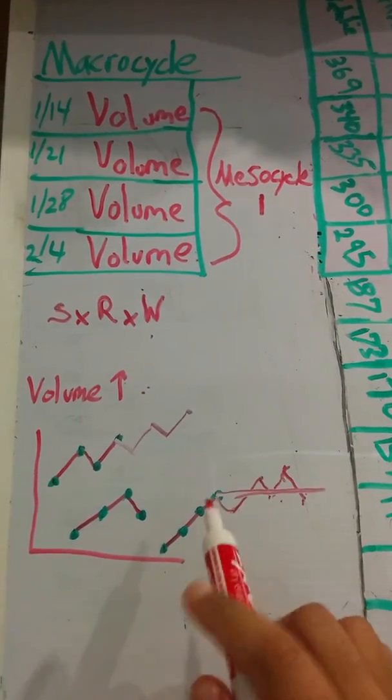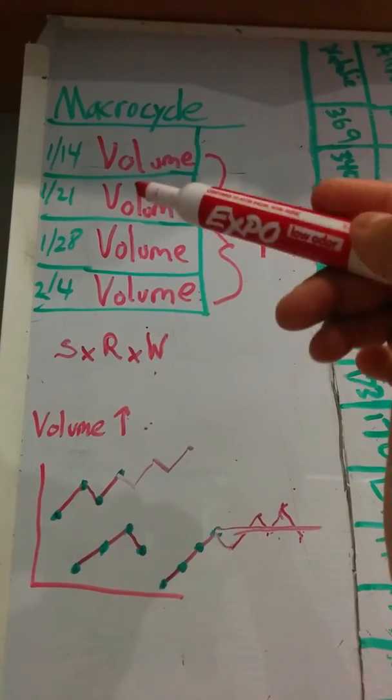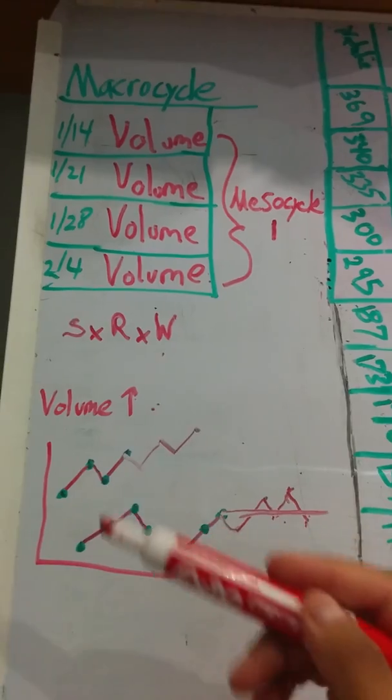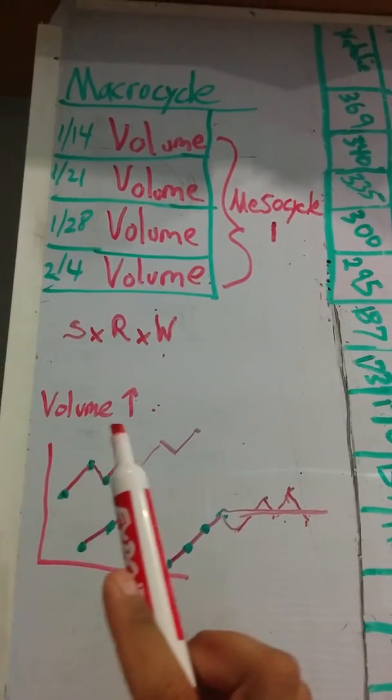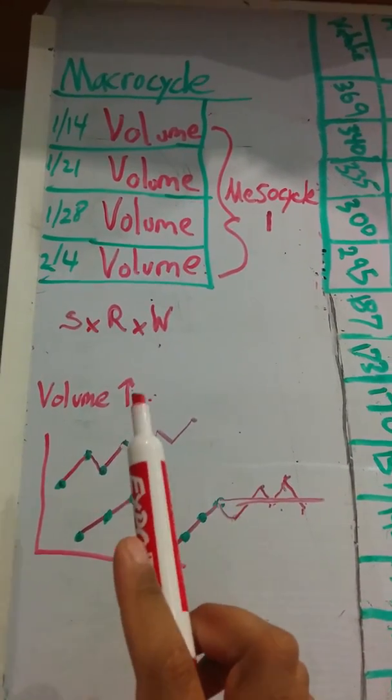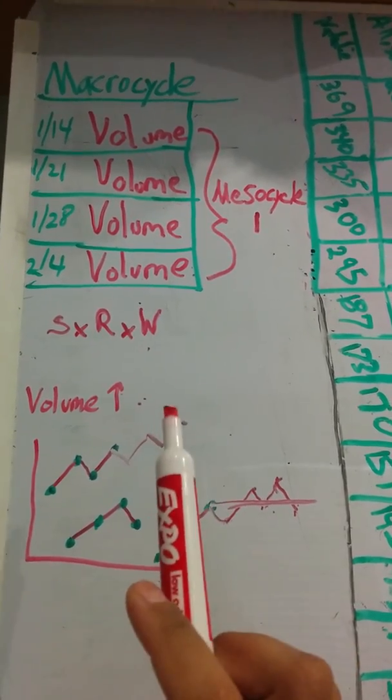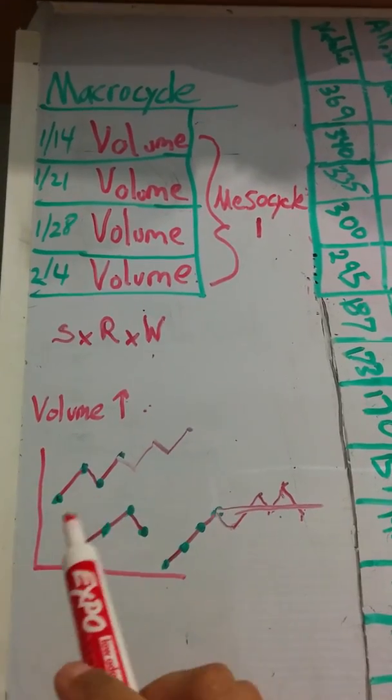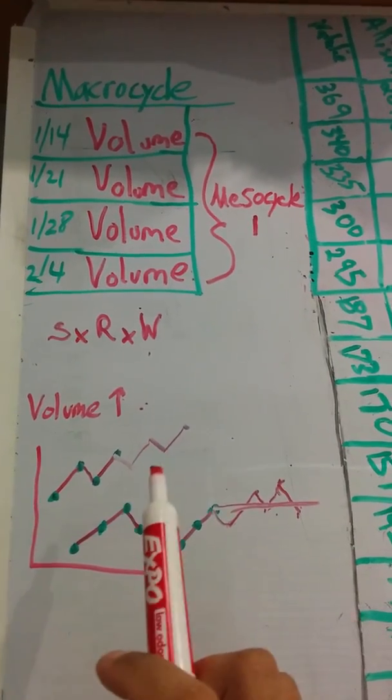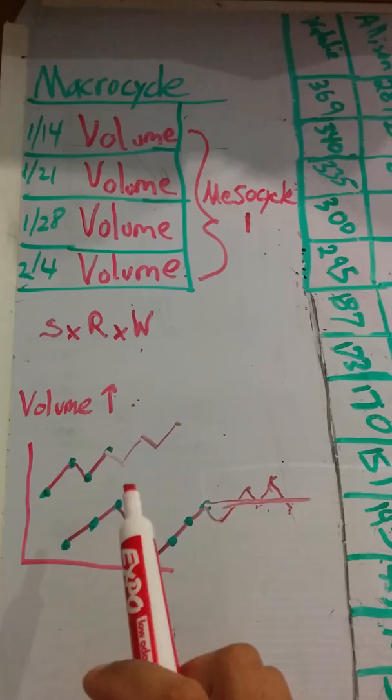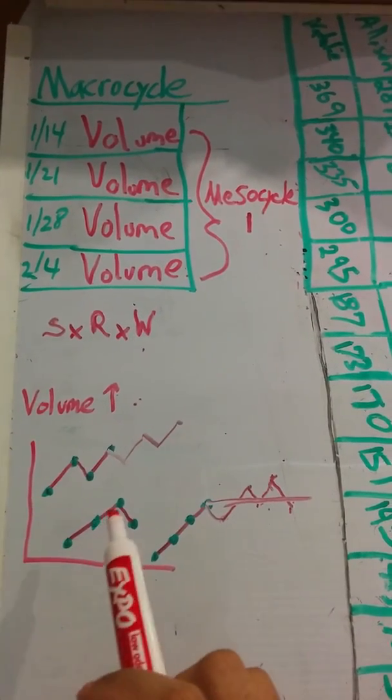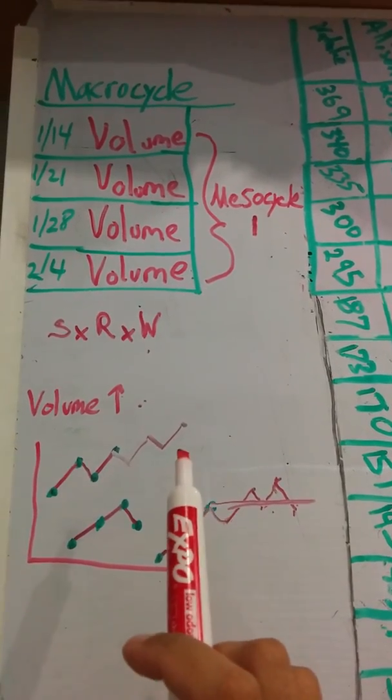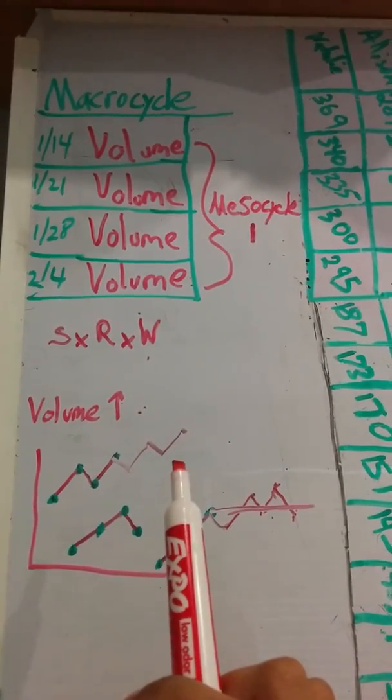So it all depends on first, one, what's your volume, what's your block called, your mesocycle called. So in this case, it's a volume block. Two, what are the goals of that mesocycle or block? So in this one, obviously, increasing the volume as much as we can. And then what's the best way that you can set up that goal for your level of experience, stress, life, whatever, calorie intake. How fast can you progress and where do you need to take in little breaks so that you can progress to the highest point. So I hope that helps.